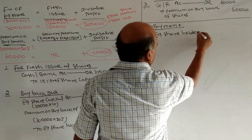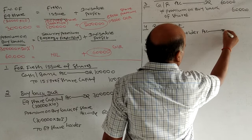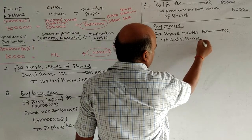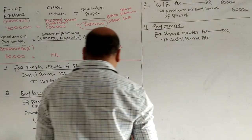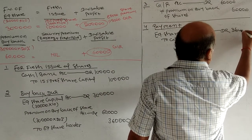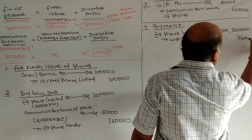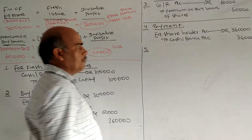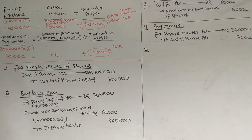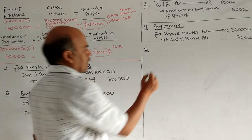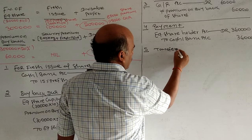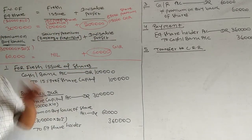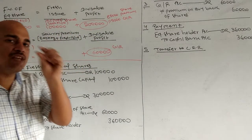Next, payment. We have to make payment to equity shares holder - credit balance. For payment, entry: Equity Shares Holder Account debit to Cash and Bank 3 lakhs 60,000. Being payment made to equity shares holder.